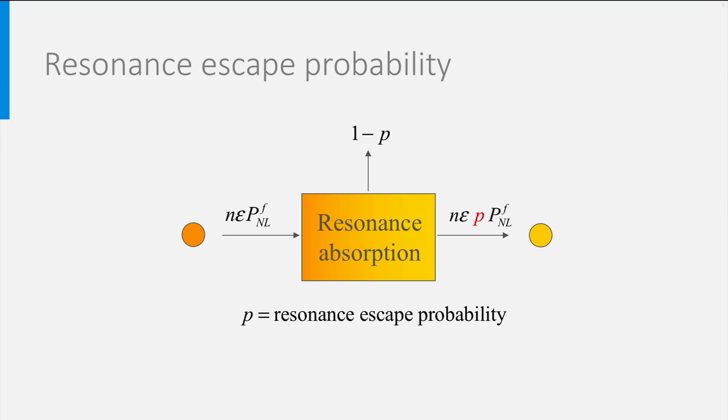The number of neutrons indicated on the right-hand side of the square have survived the resonances and will reach the thermal energy range.